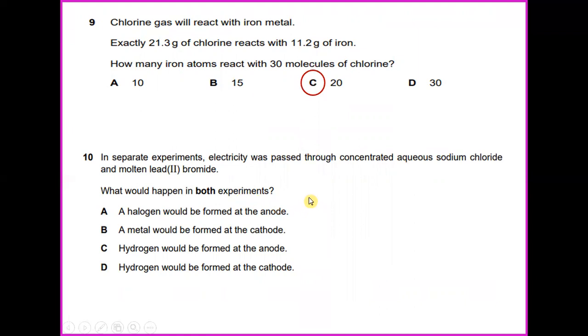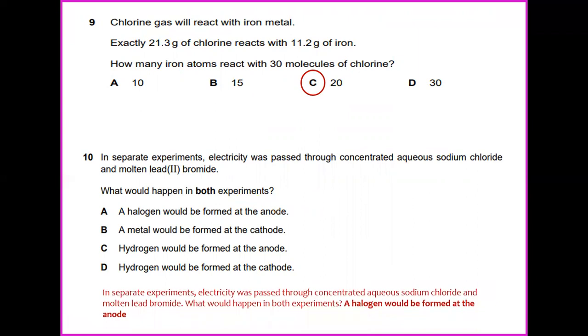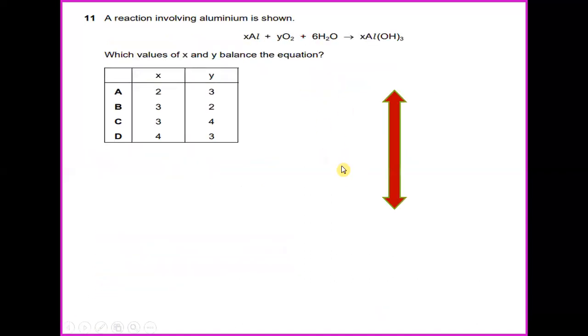In separate experiments, electricity was passed through concentrated sodium chloride and molten lead bromide. What would happen in both experiments? What happens in both experiments is a halogen would be formed at the anode. So the answer would be A.